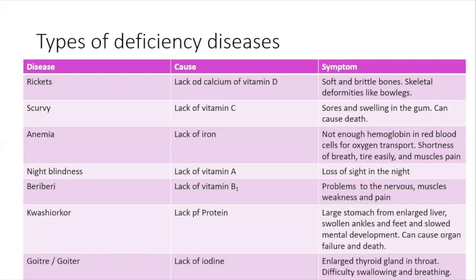Next we have a disease called scurvy. Scurvy is caused by a lack of vitamin C. The symptoms of scurvy include sores and swelling in the gums. Historically, scurvy has caused many deaths, especially in times when people didn't understand that you needed certain types of vitamins to survive. When they weren't taking in their citrus fruits and vegetables that contain vitamin C, persons were dying — I encourage you to research it.